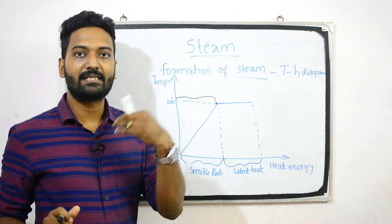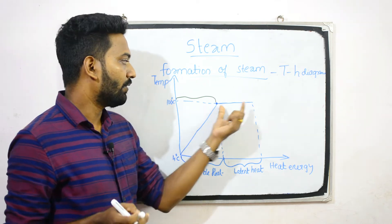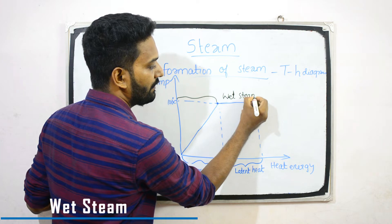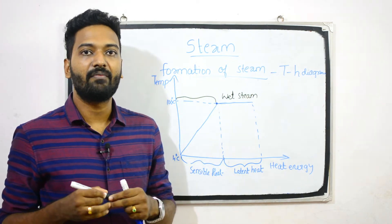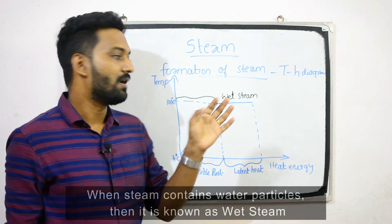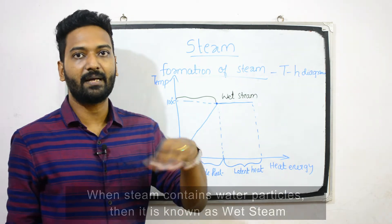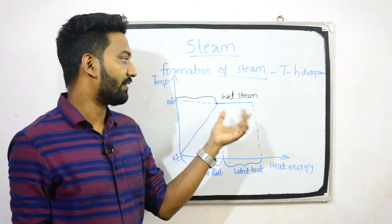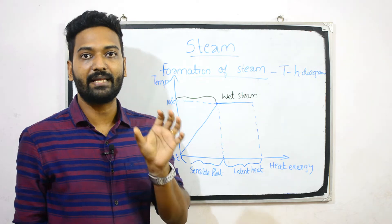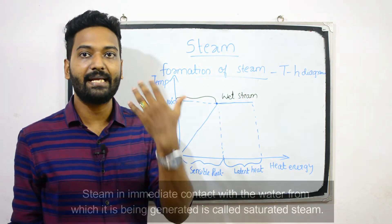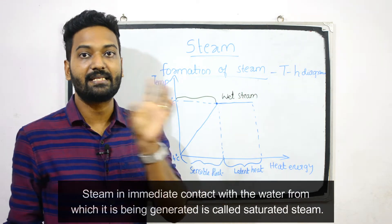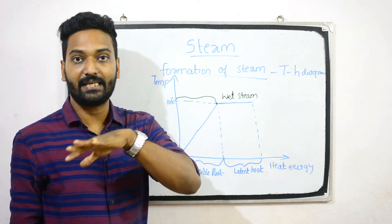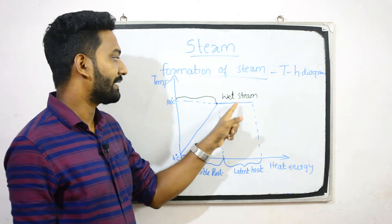Water is wet, steam can be wet. This region is wet steam. When steam contains water particles, it is known as wet steam. This region is saturated steam. Saturated steam is steam in immediate contact with the water from which it is being generated.